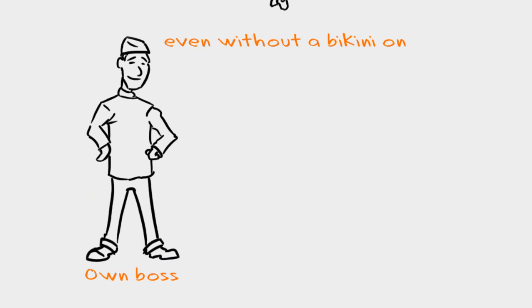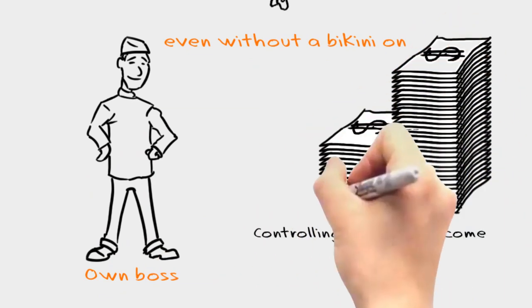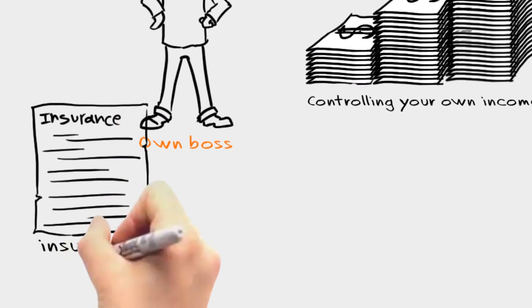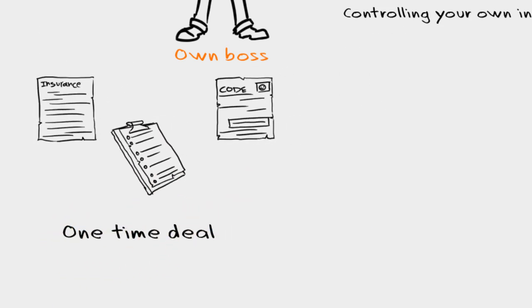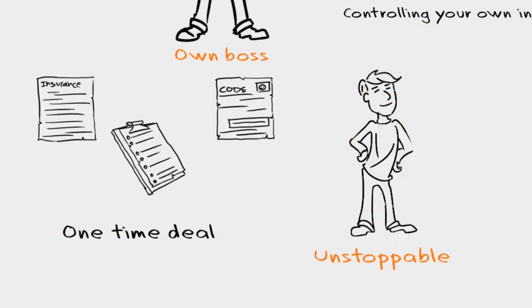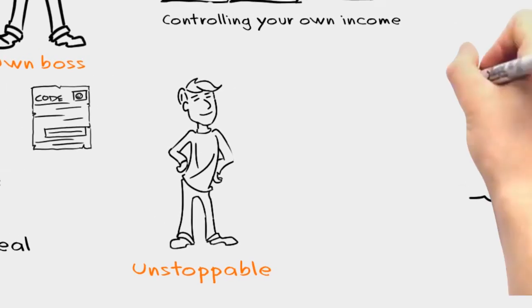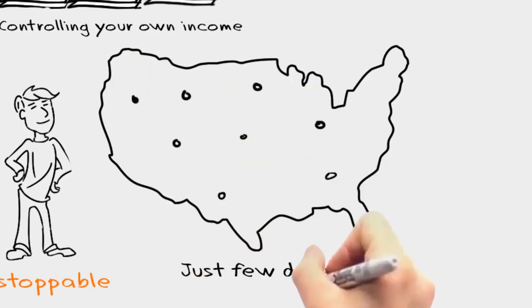Along with being your own boss and controlling your own income comes a few obstacles. You'll need insurance, licenses, food safety training. But all these are a one-time deal. Once out of the way, you'll be unstoppable. In some states, you can have all that done in just a few days.